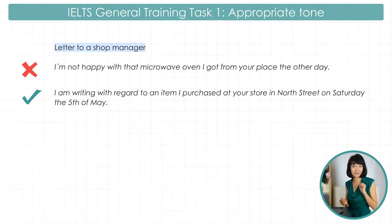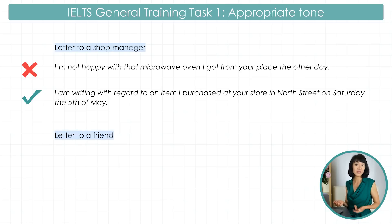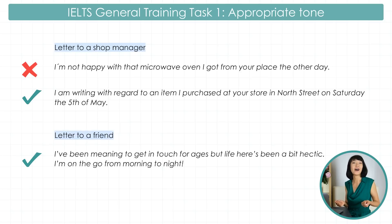But an informal style is perfect if you are writing a letter to an old friend: 'I've been meaning to get in touch for ages, but life here has been a bit hectic. I'm on the go from morning to night.' In IELTS writing, how you respond to the task is important. What the examiner is looking for is clarity – how well can you develop your answer to the task and at the same time make your point of view clear?